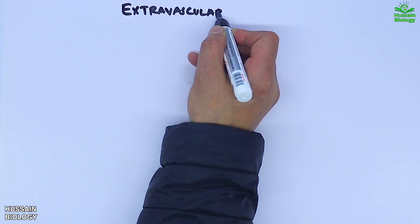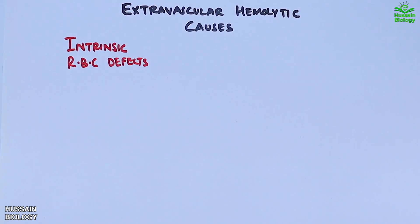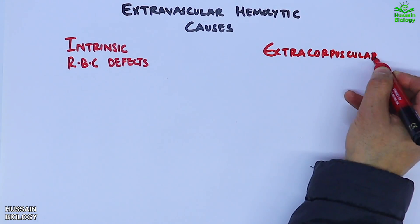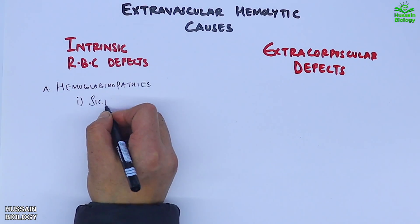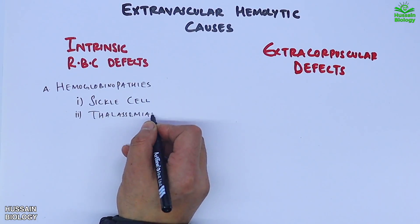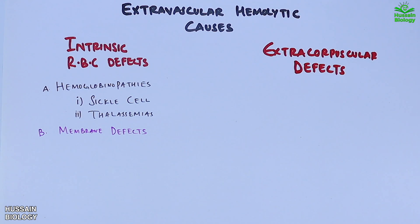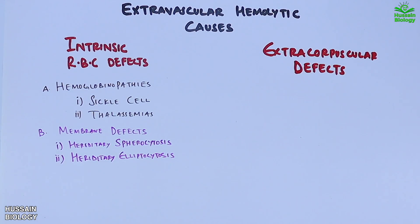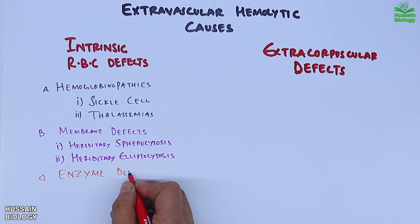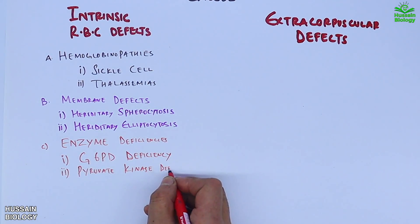Moving towards extravascular causes, it occurs two ways: intrinsic RBC defects and extra-corpuscular defects. In intrinsic RBC defects we have hemoglobinopathies like sickle cell disease or thalassemia. Second are membrane defects of RBCs like hereditary spherocytosis and hereditary elliptocytosis. Third is enzyme deficiency like G6PD deficiency and pyruvate kinase deficiency.